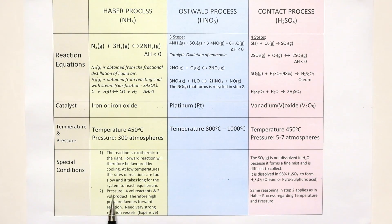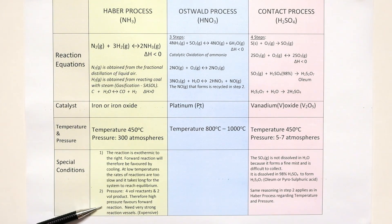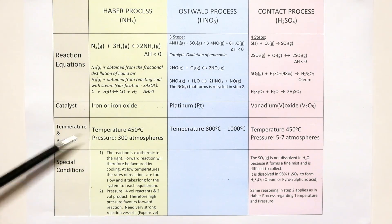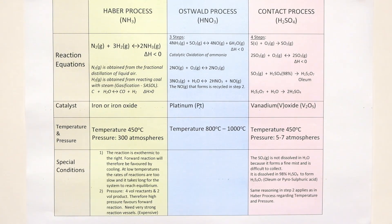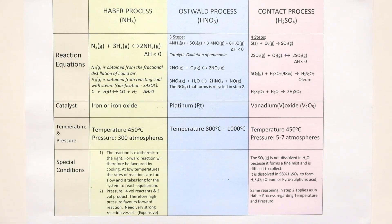The constraint here — the special condition — is that pressure requires very strong reaction vessels, and that is expensive. So a pressure of 300 atmospheres is applied. Four volumes of reactants to two volumes of product; therefore a high pressure favors the forward reaction. You need to know everything in this green column.